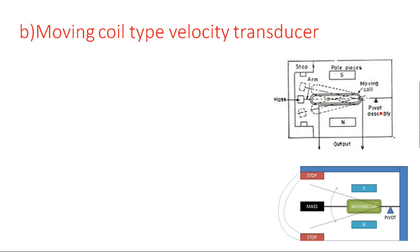The second type is moving coil type velocity transducer. In the first case, the coil is fixed and magnet is moving. In the second case, the magnet is fixed — south pole and north pole are indicated here as pole pieces — and the coil is moving. The coil moves upward 45 degrees and downward 45 degrees. It is fitted to a stop assembly on one side and a pivot assembly on the other side.